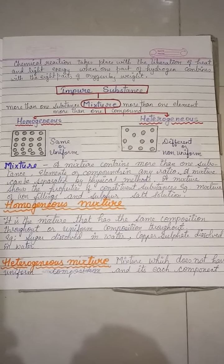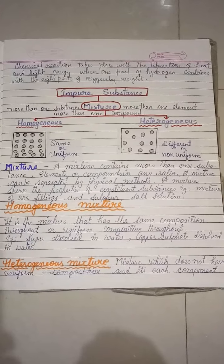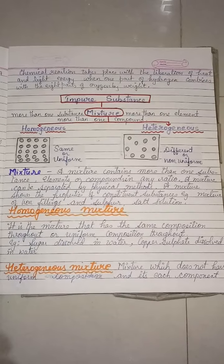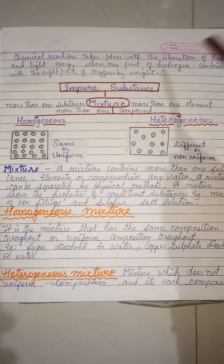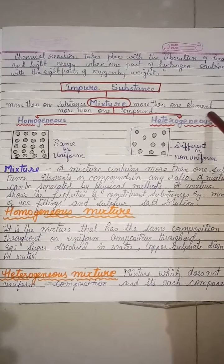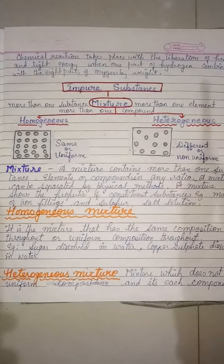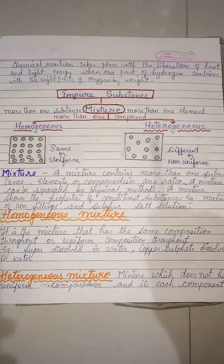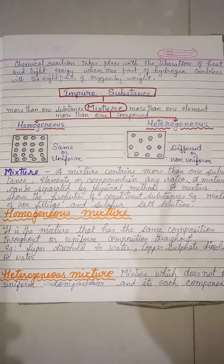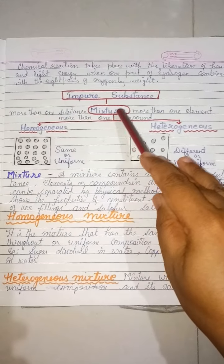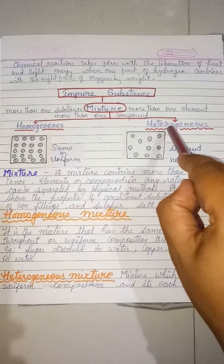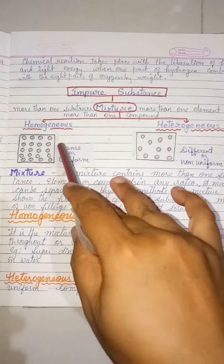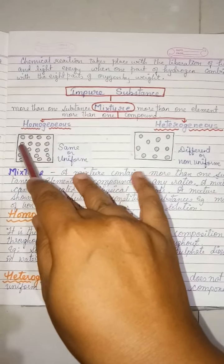Impure substances are those substances which are made up of more than one substance, more than one element, or more than one compound. An example of impure substances is a mixture. Mixtures are basically of two types: homogeneous and heterogeneous.